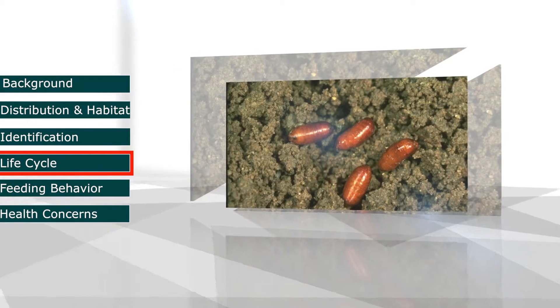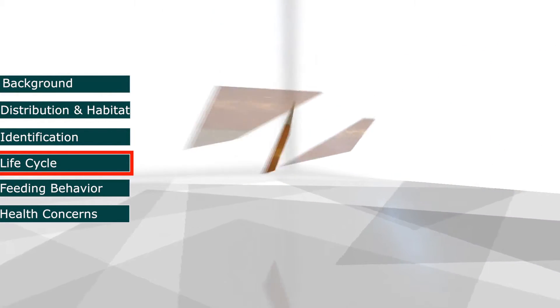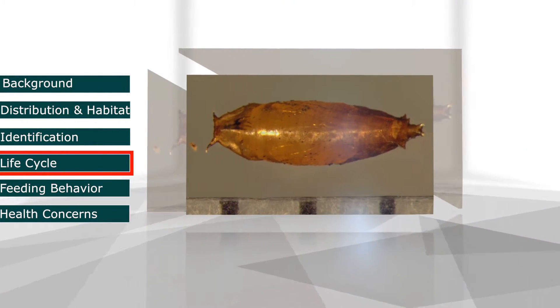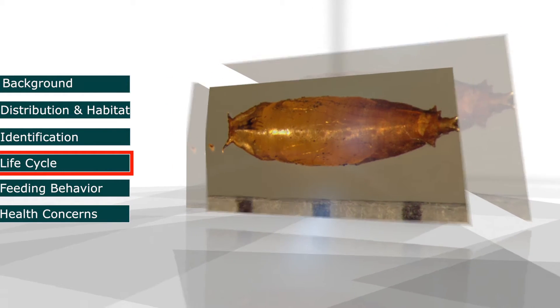They will then become pupa for approximately 1 to 2 weeks, during which time they will move to drier areas of the fruit or outside of it entirely.